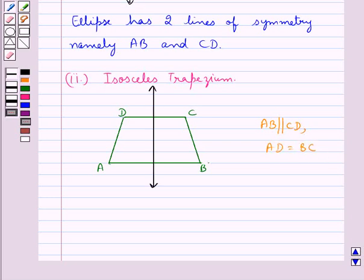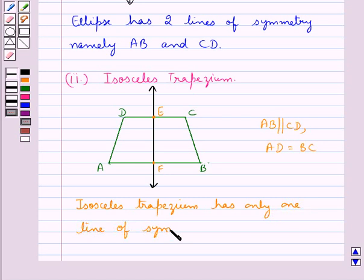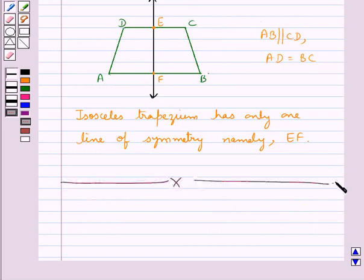This line that we have drawn is the line of symmetry for isosceles trapezium ABCD because the figure would be identical on either side of this line. Let this line be EF. Thus we say that isosceles trapezium has only one line of symmetry and in this case the line of symmetry is EF. So this completes the session. Hope you have understood the solution for this question.